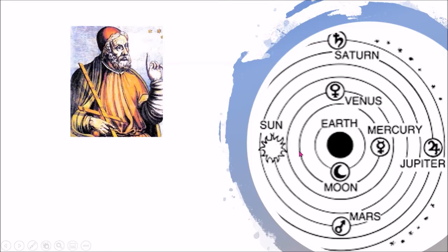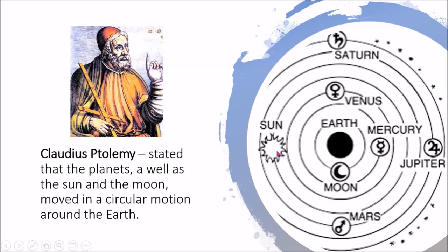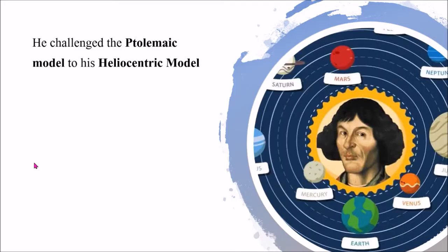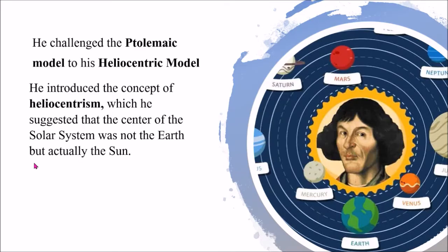But they couldn't explain some other movements of the planets, how it works or how it moves. Although Claudius Ptolemy stated that the planets as well as the sun and moon move in circular motion around the earth. He introduced the concept of heliocentrism, which suggested that the center of the solar system was not the earth but actually the sun.